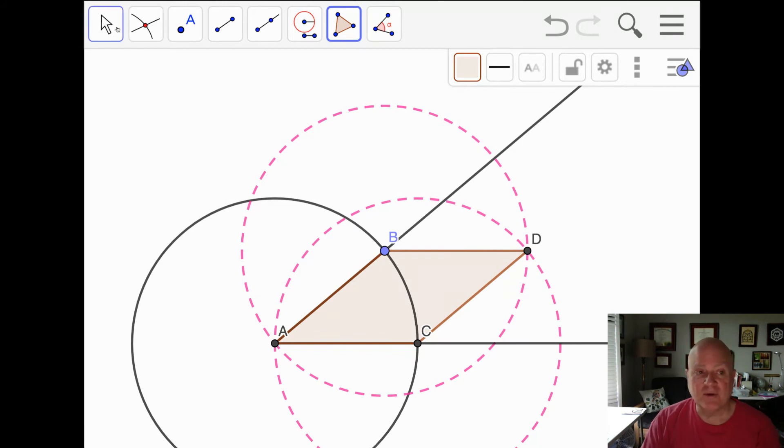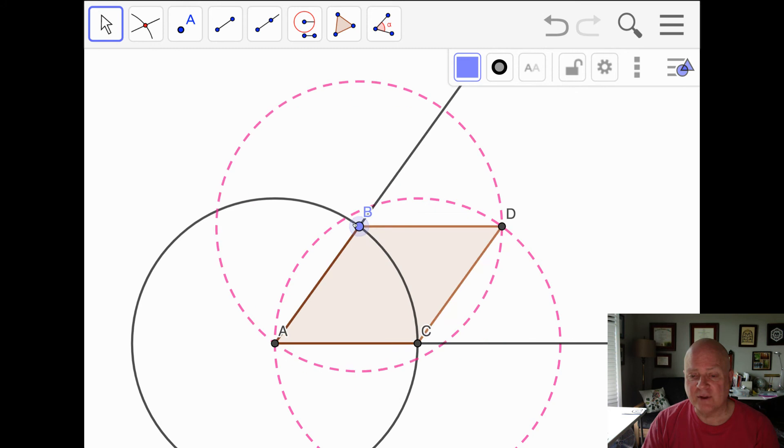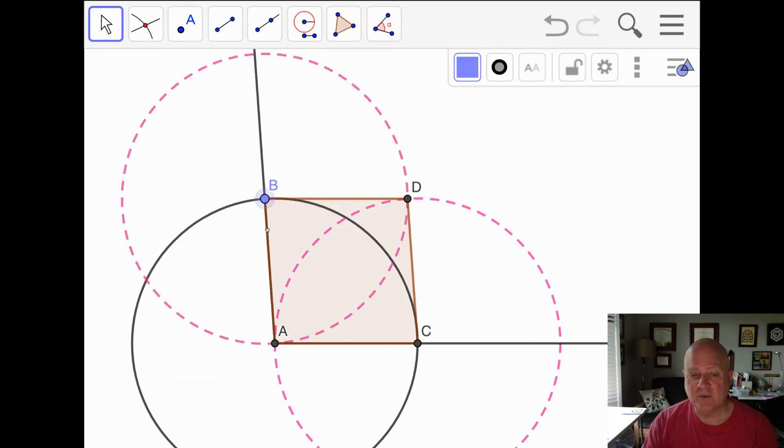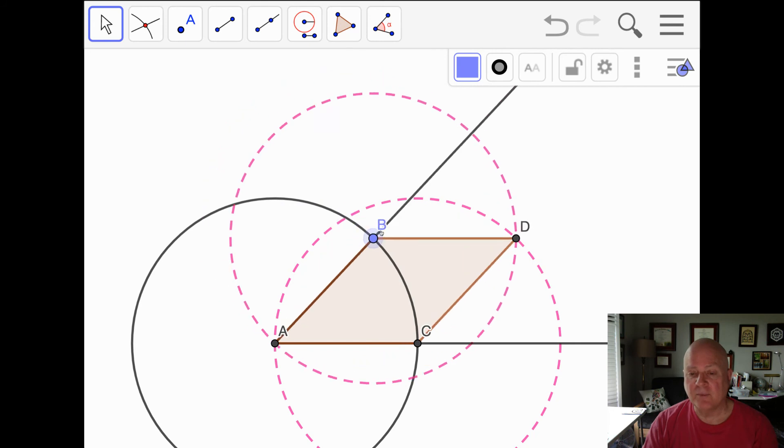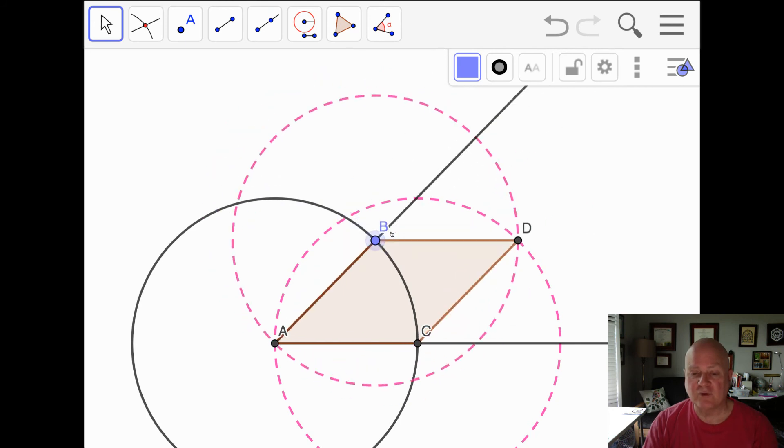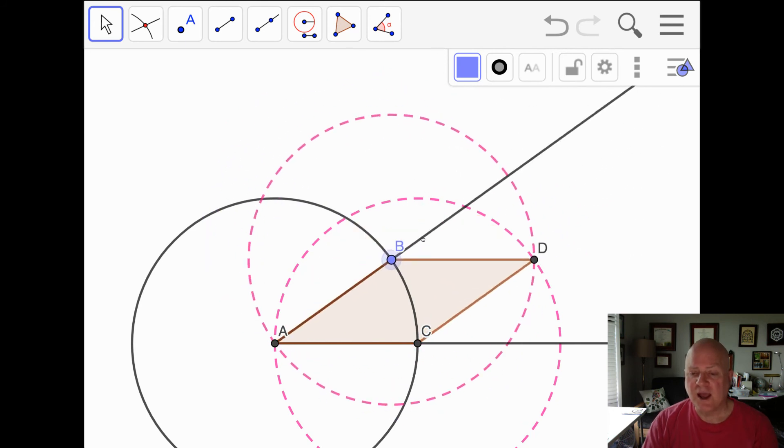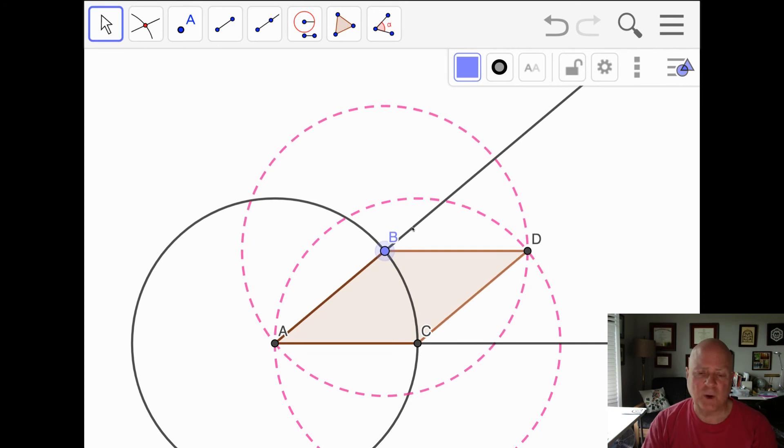So here we have quadrilateral ABDC. What kind of quadrilateral is that? And you can see I could make it into a square. I could make it into, like we had before, with equilateral triangles, two equilateral triangles. This is a rhombus. Why is it a rhombus?